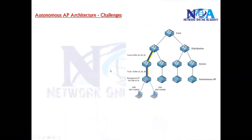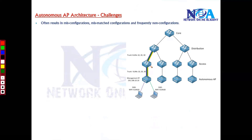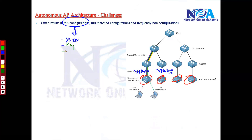One of the major challenges is misconfiguration, because we are configuring every access point separately. There is a possibility of SSID misconfiguration — for example, typing errors where instead of VLAN 10 you accidentally enter VLAN 100. There can also be security key misconfigurations or incorrect VLAN-to-SSID mappings. Both mismatches and misconfigurations result in wrong configurations.